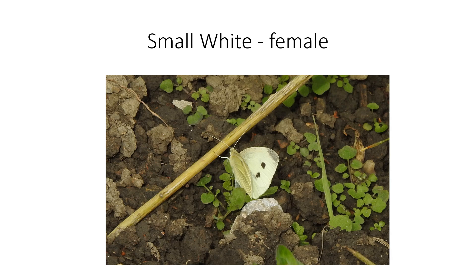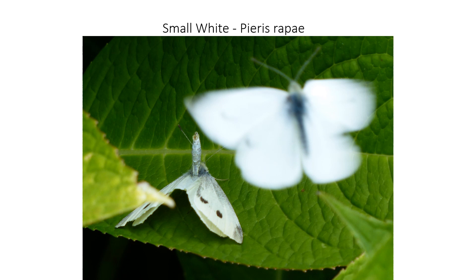Here's a female small white, showing the underwing as well — just a pale yellow underwing. The black tips don't extend as far down the wing as in the large white. And here are some in flight — this is a female holding off a male.